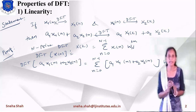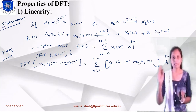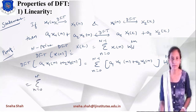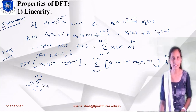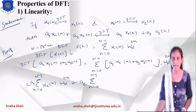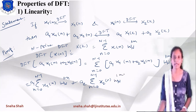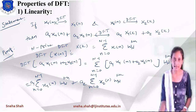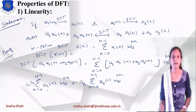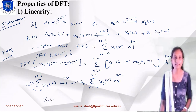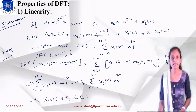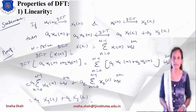Using the distributive rule (a+b)·c = ac + bc, we expand this to: summation n=0 to N-1 of a1·x1(n)·W_N^(kn) plus summation n=0 to N-1 of a2·x2(n)·W_N^(kn). Since a1 and a2 are constants, they come outside the summation. Comparing with the DFT equation, the first summation represents X1(k) and the second represents X2(k). So the result is a1·X1(k) + a2·X2(k), which proves the linearity property.